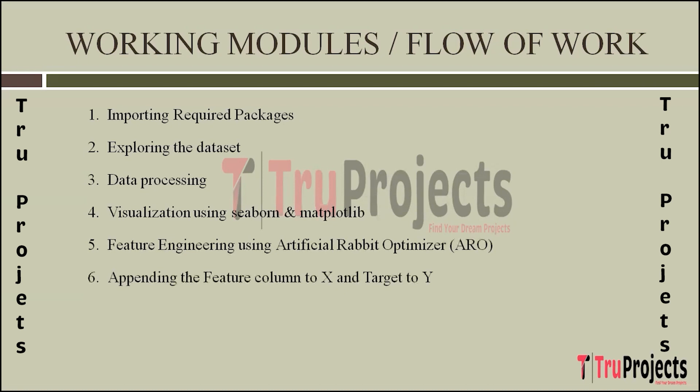The next step is appending the feature column to X and target to Y. The dataset is structured by appending engineered features to X and the target variable to Y, preparing it for machine learning model training. The next step is train and test split — the dataset is split into training and testing sets. This division is crucial for evaluating model performance on unseen data, ensuring reliable predictions.